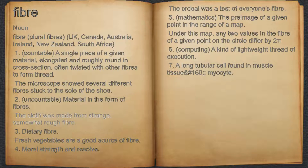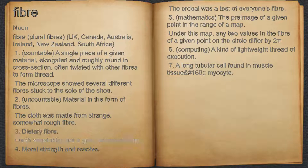For example, the cloth was made from strange, somewhat rough fiber. 3. Dietary fiber. For example, fresh vegetables are a good source of fiber.